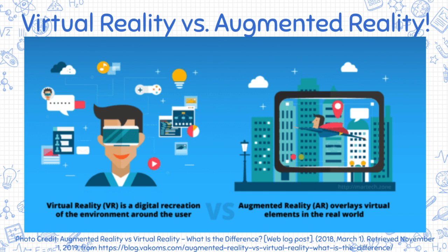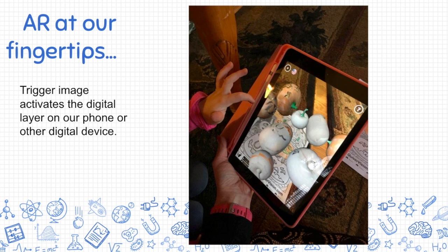Let's discuss a little bit about the differences between virtual reality and augmented reality. Virtual reality requires a device that you place on your head in order to immerse yourself in a 360 experience, such as Google Goggles, whereas augmented reality creates an overlay where you scan something and then it activates the reality on a device of some kind. We can certainly have augmented reality at our fingertips — a trigger image is used to activate the digital layer on our phone or another digital device so we can interact with it.